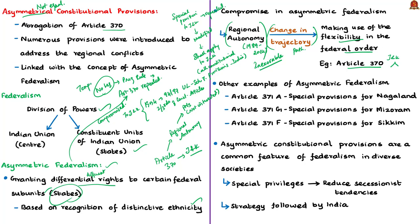Other examples of asymmetric federalism include Article 371A (special provisions for Nagaland), Article 371G (Mizoram), and Article 371F (Sikkim). When the small state of Sikkim joined the Indian Union in the early 1970s, Article 371F was added to the Constitution, preserving laws in place before Sikkim's accession unless amended or repealed by the state legislature. Asymmetric federalism is thus present for many states in India.